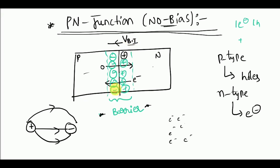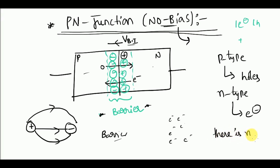This built-in potential will act as a barrier to stop further diffusion. In the no-bias case, which is also called equilibrium, there is no net current. To maintain that, the phenomenon of diffusion should stop after some time, and that is what this barrier achieves — it will not allow further diffusion to take place.